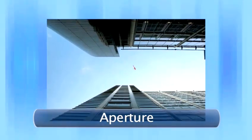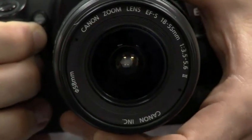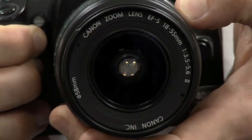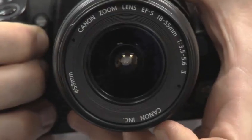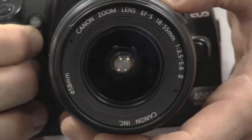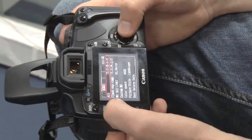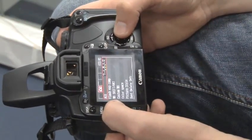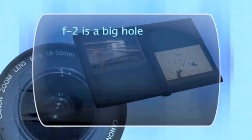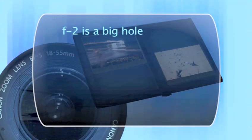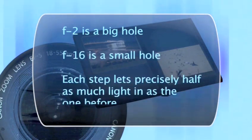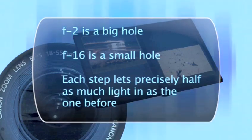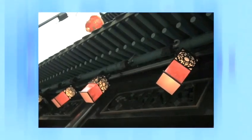Aperture: the aperture is the camera's eye. Just like the human pupil, it can go small to take in less light, and big if it's dark to allow in as much light as possible. Flipping it off automatic allows you to control these settings, known as f-stops. F2 is a big hole, while f16 is small, and each step along the way lets in precisely half as much light as the one before it. A photo taken with a low f-stop looks like this, while a photo with a high f-stop will look like this.